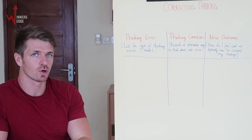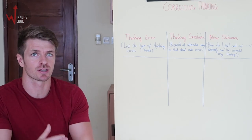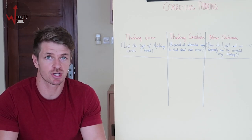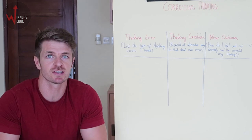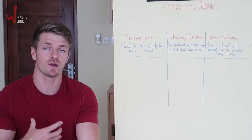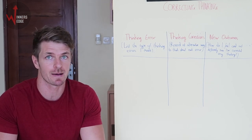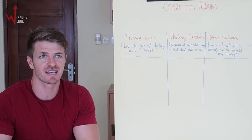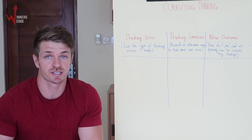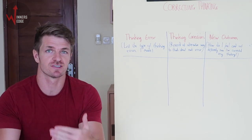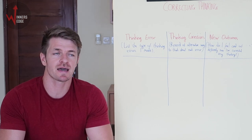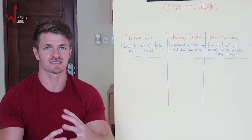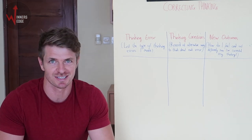The third error is disqualifying the positive, which links into all-or-nothing thinking — they were only focusing on everything that was going bad. They could have been playing great; there could have been lots of good things in the session, but they got so angry about not winning and disqualified all the good things. The final error is overgeneralizing. They said 'I always get unlucky, why me again?' and went into victim mentality. When you overgeneralize, your mind remembers all the times you've lost and you create a narrative that you're an unlucky person. In reality, it's just an overgeneralization.